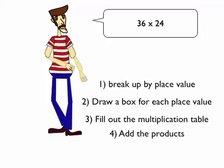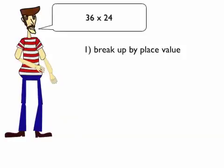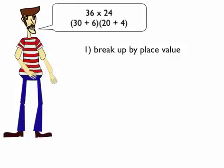So, I break up my place value. 36 is thirty, six. And 24 is twenty, four.